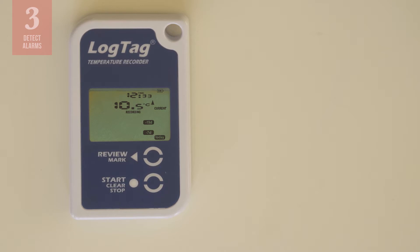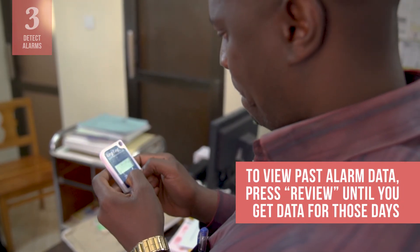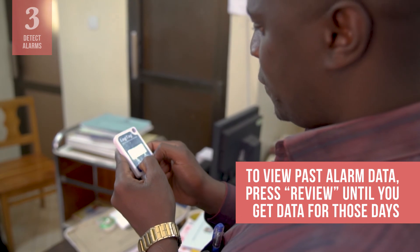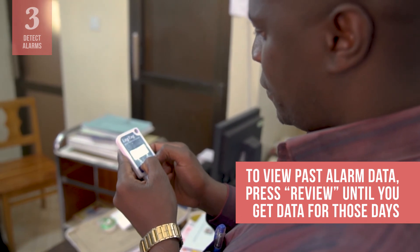Like other 30DTRs, the log tag records all the heat and cold alarms for the past 30 days. The days that alarms were triggered are shown here at the bottom of the display. You can see that, in addition to today's alarm, an alarm was triggered 7 days ago and 19 days ago. To view past alarm data, press review until you get the temperature data for those days.